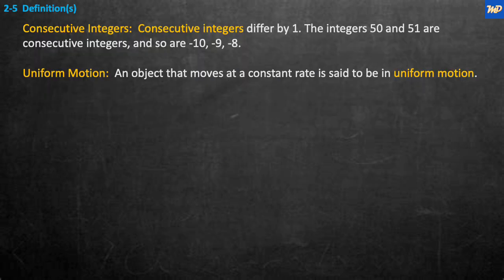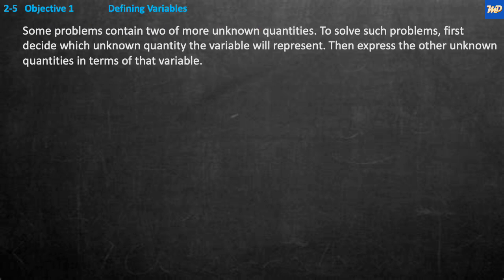Before we get started, I would like to go over a couple definitions. Consecutive integers differ by 1. The integers 50 and 51 are consecutive integers, and so are negative 10, negative 9, negative 8. What is uniform motion? An object that moves at a constant rate is said to be in uniform motion. For Objective 1, Defining Variables: some problems contain two or more unknown quantities. To solve such problems, first decide which unknown quantity the variable will represent, and then express the other unknown quantities in terms of that variable.